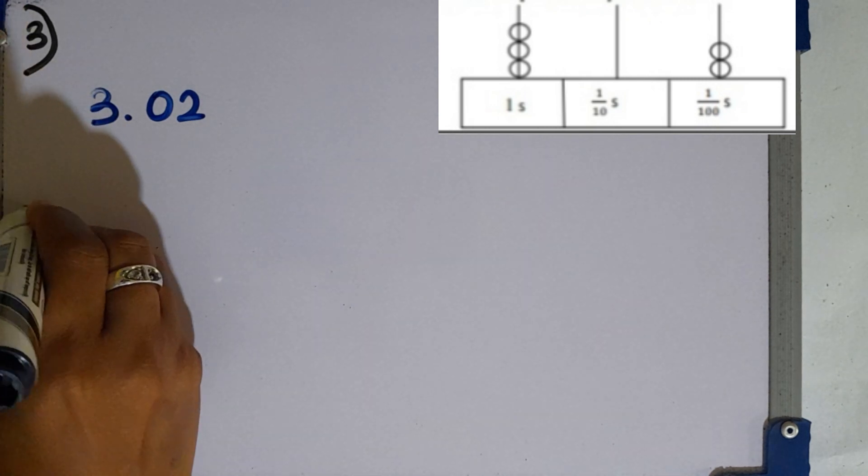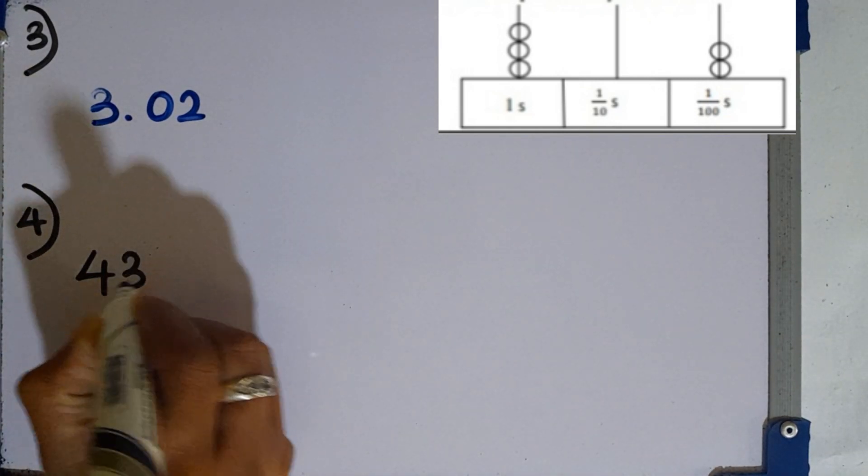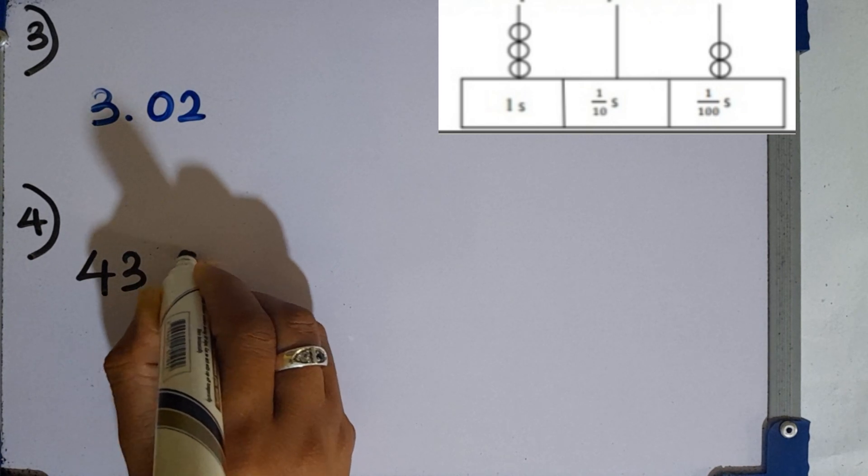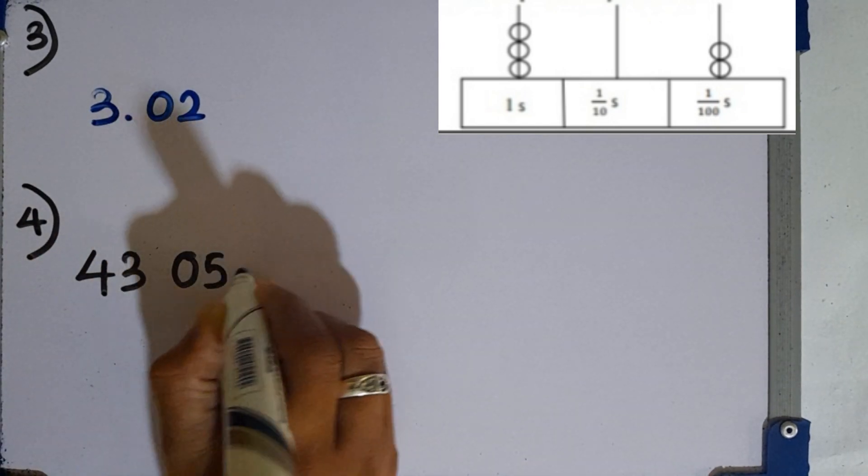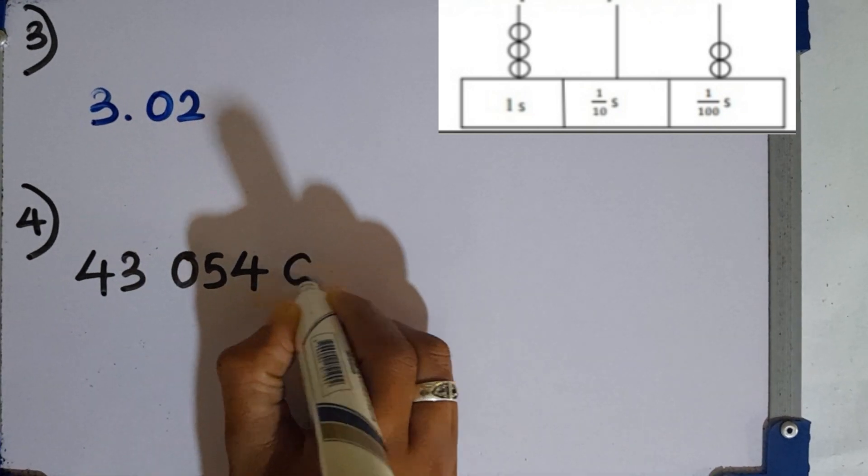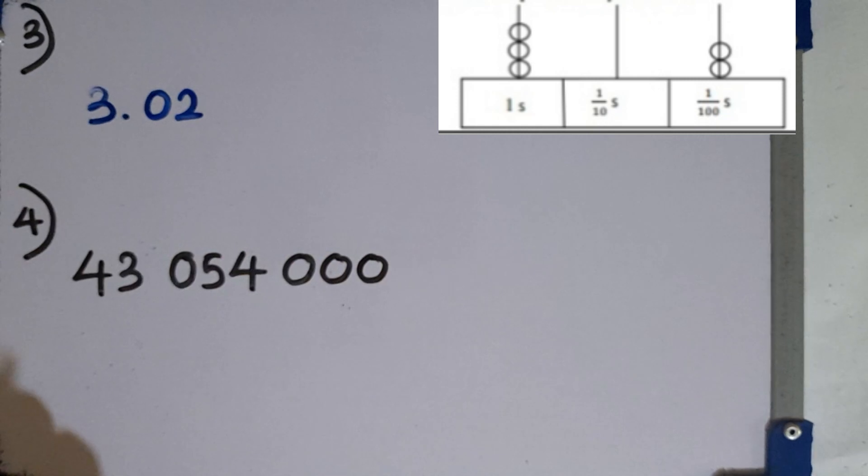Then question number 4. Write the number given below in standard form. 4.03 million. You have 43,000, then 54,000. You have to put a zero here. 54. Then 4 units on. You have to put another 3 zeros.